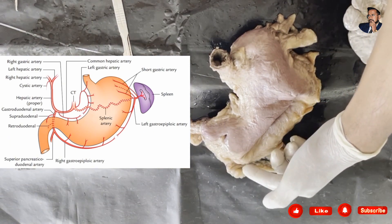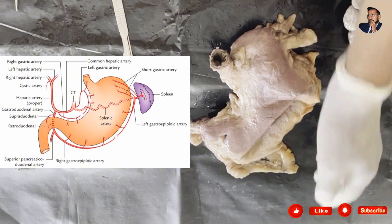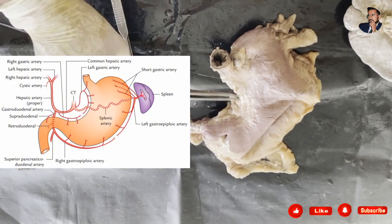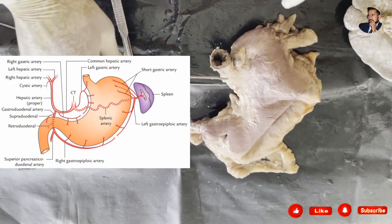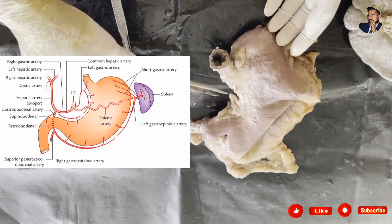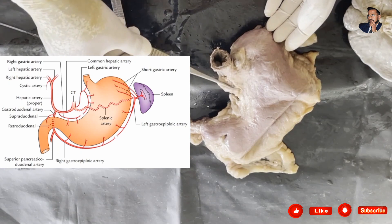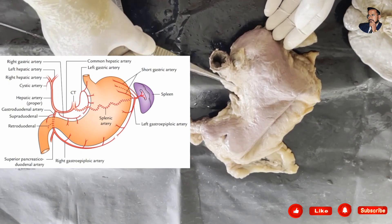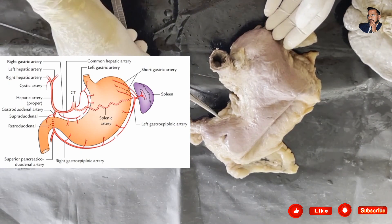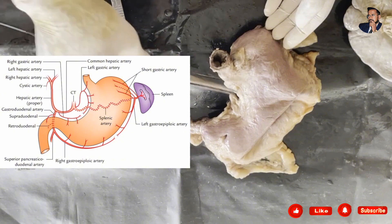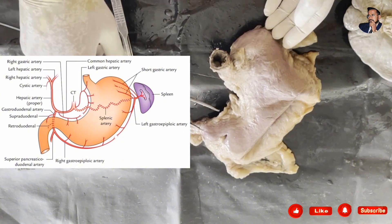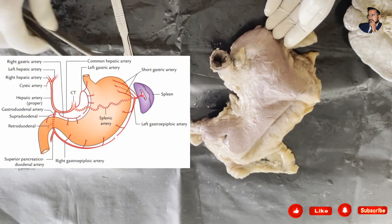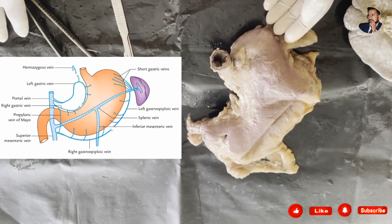The lesser curvature is supplied by the right and left gastric arteries. Above, it is supplied by the left gastric artery, which is a branch of the celiac trunk. Below, it is supplied by the right gastric artery, which is a branch of the common hepatic artery, itself a branch of the celiac trunk.